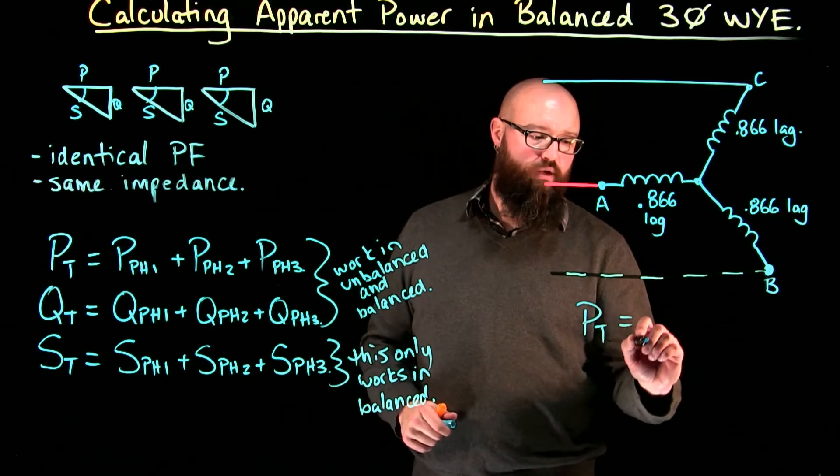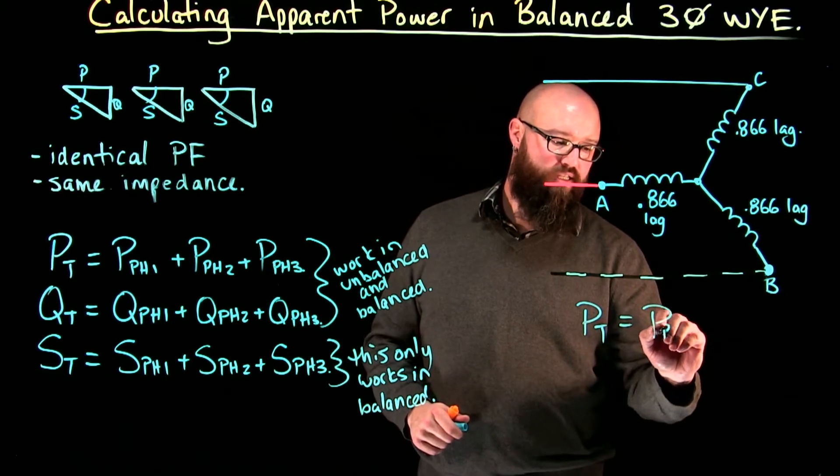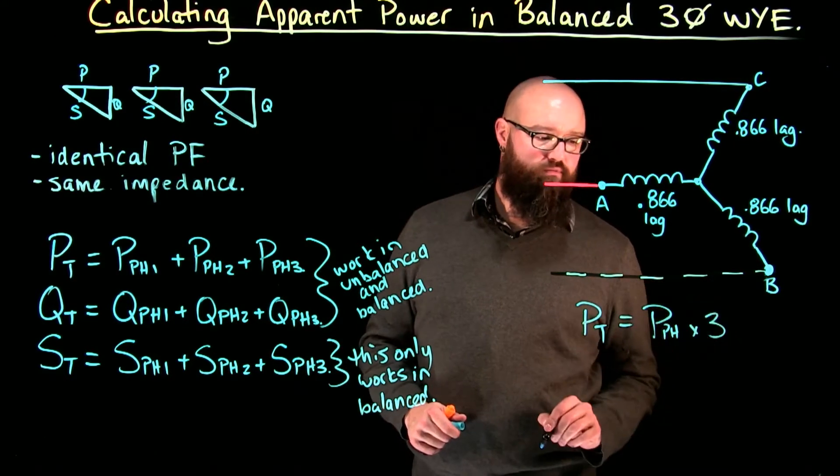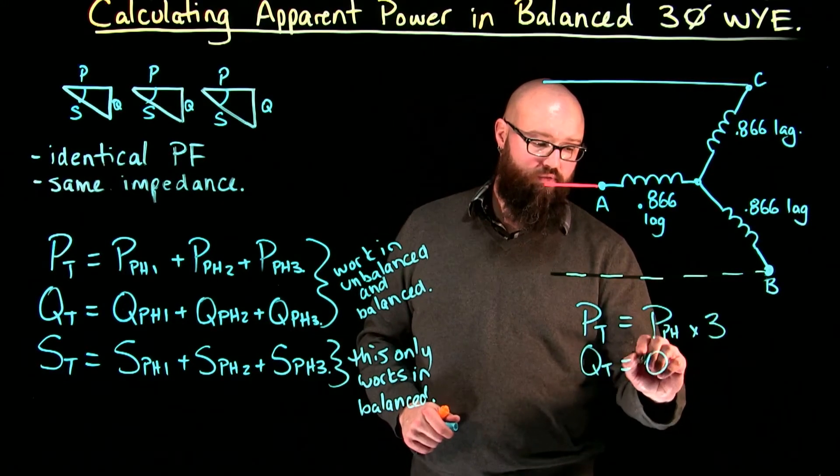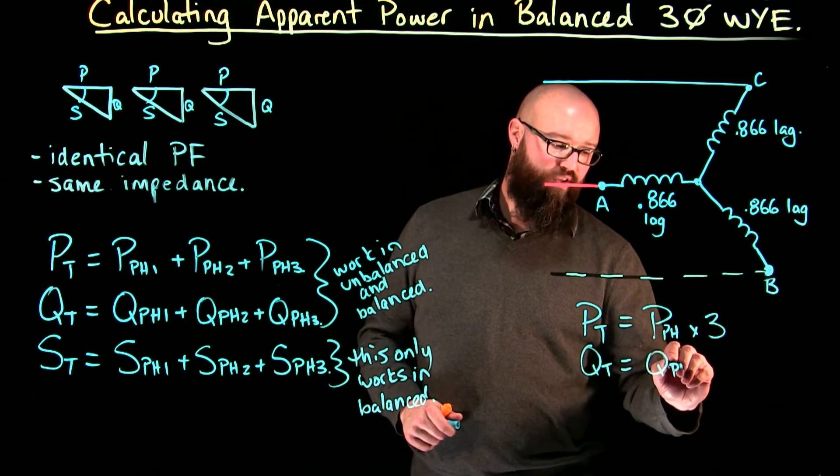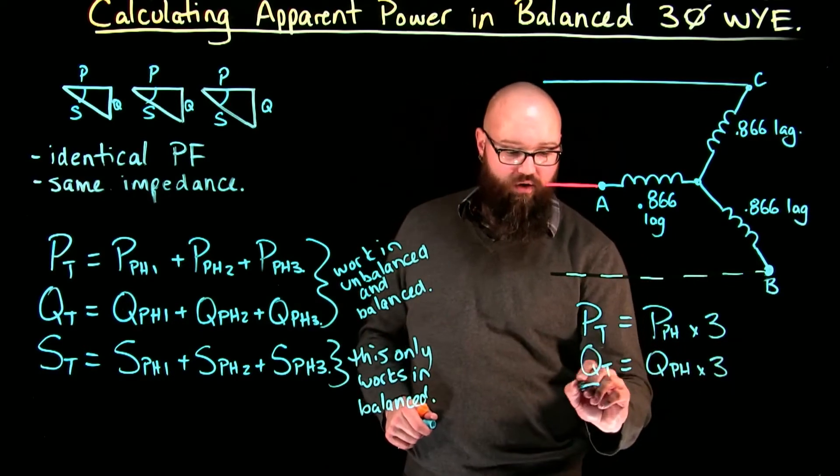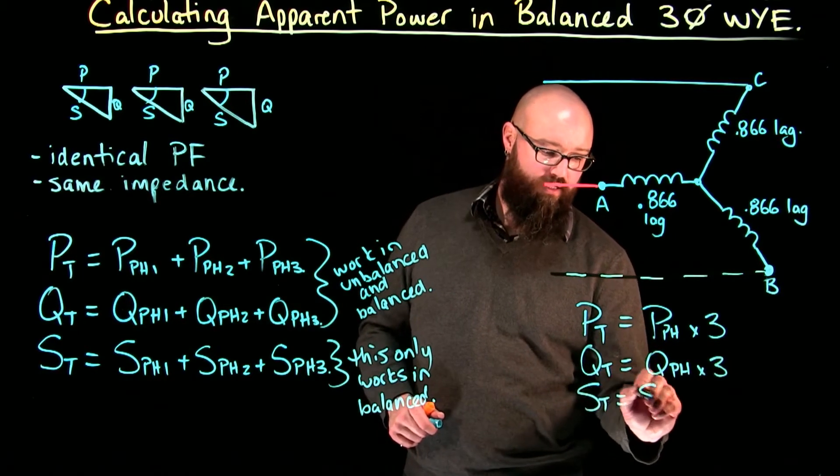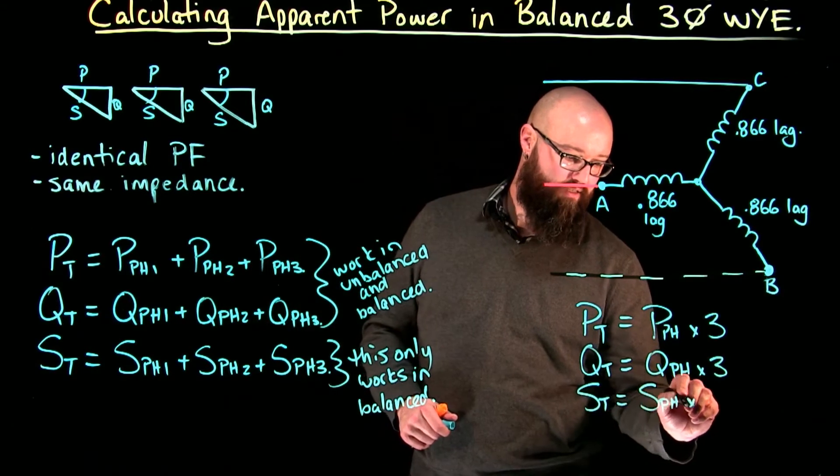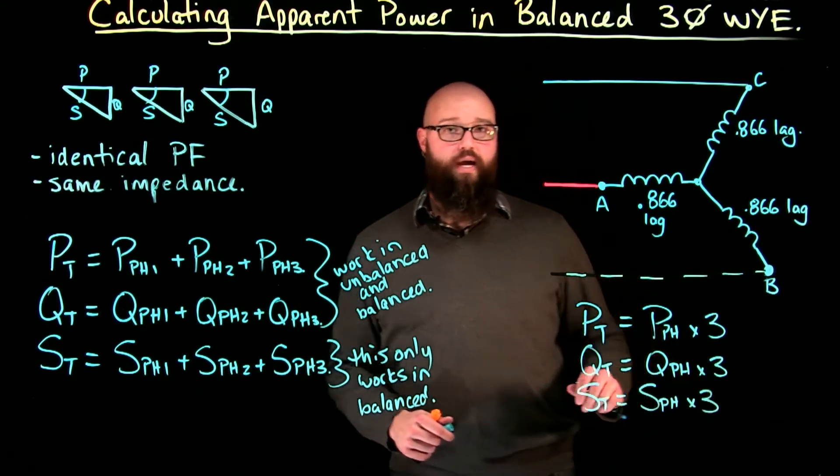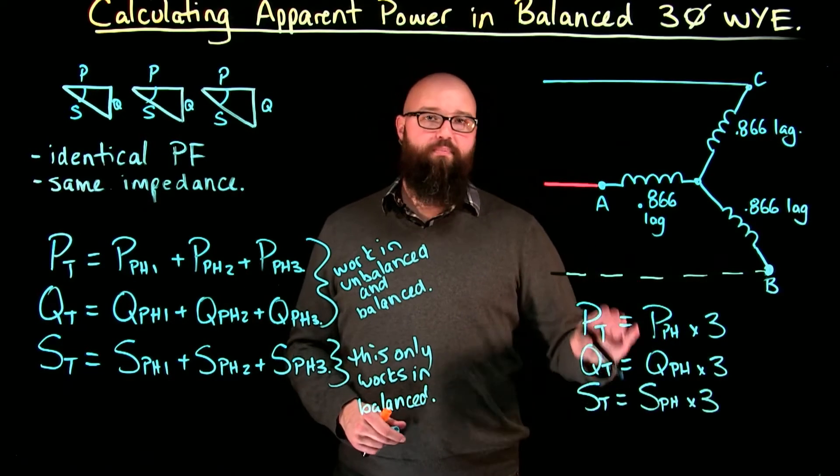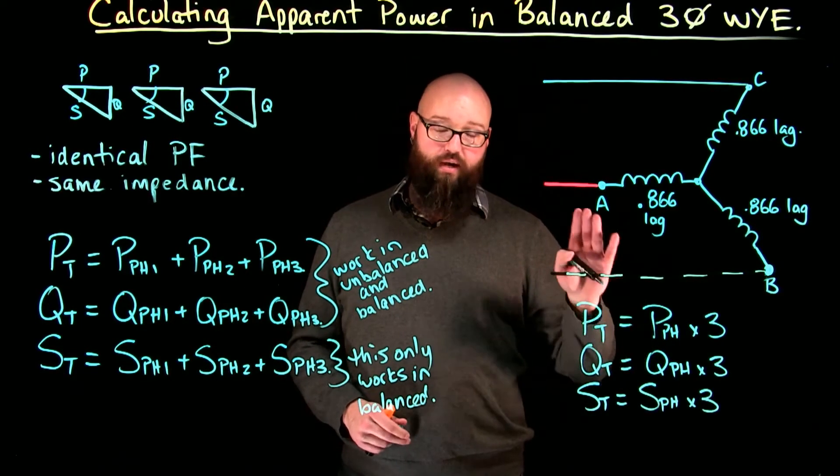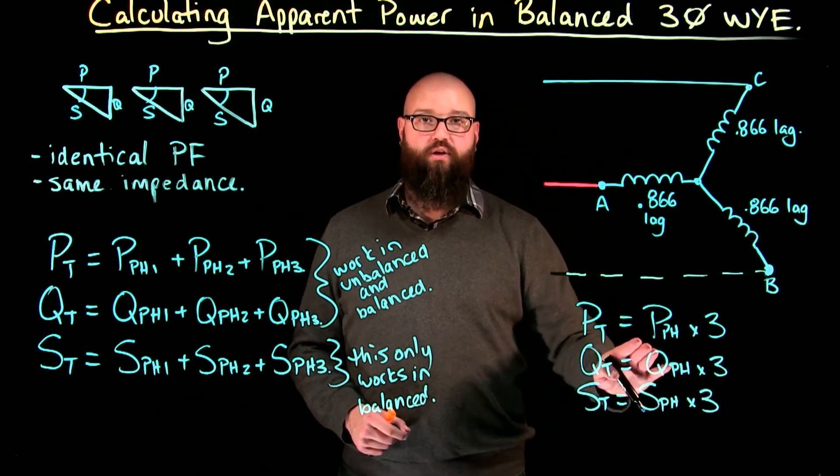Power total equals power of one phase times three. Q total equals reactive power of one phase times three. And apparent power total equals apparent power per phase times three. These statements will hold true, again, as long as we are dealing with a purely balanced circuit.